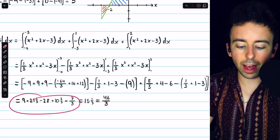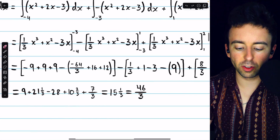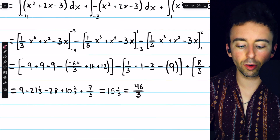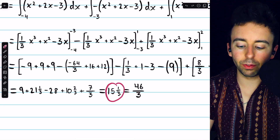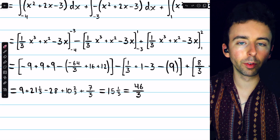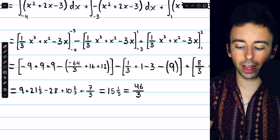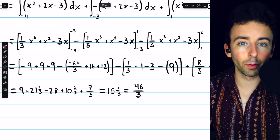Finally, we simplify — using mixed numbers so the fractions don't get too large — and in the end it's 15 and one-third, which we convert to an improper fraction for a final answer of 46 over 3.